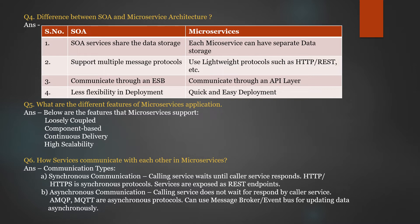The next question is: what are the different features of a microservices application? First, loosely coupled — your services within the system can be largely decoupled, so your applications can be easily built, altered, and scaled. It is component-based in nature. Next is continuous delivery, which allows frequent releases of your software through automation of software testing and approvals. High scalability is another feature — you can scale the application either through scale-up or scale-out.